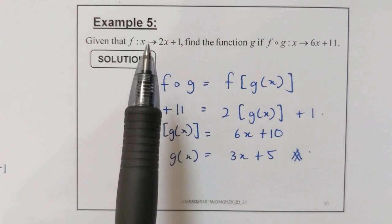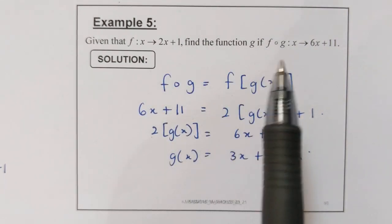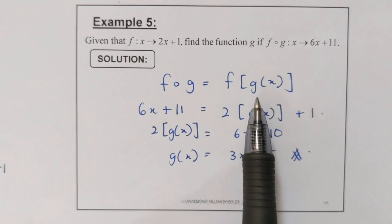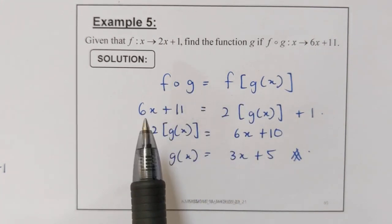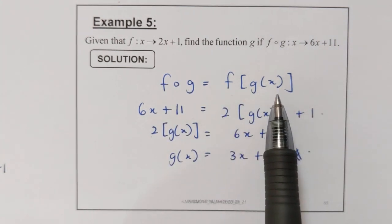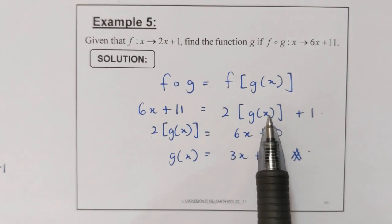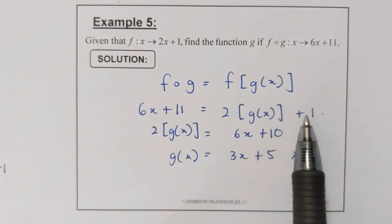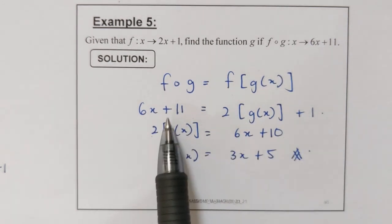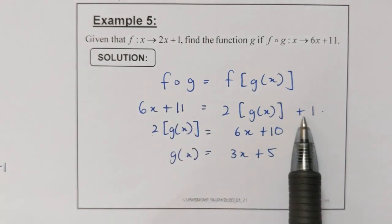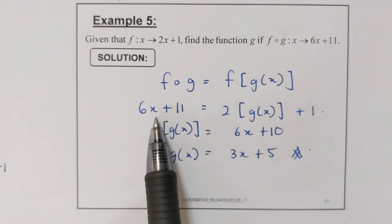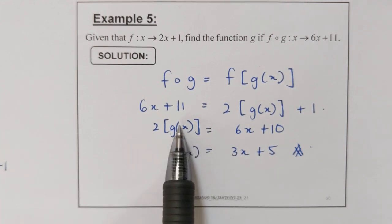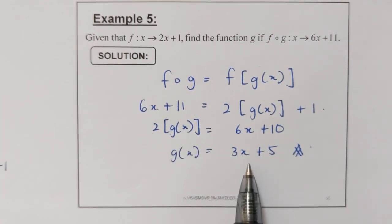Example 5. Given that function f(x) equals 2x plus 1, find the function g if f(g(x)) equals 6x plus 11. We know that f of g is actually f(g(x)). We compare these two. We know that f(g(x)) equals 6x plus 11. We don't know what g(x) is, so we substitute g(x) into our function f: 2 times g(x) plus 1. Now moving the 1 to the left side gives 6x plus 10 equals 2 times g(x). Dividing by 2, we get g(x) equals 3x plus 5.